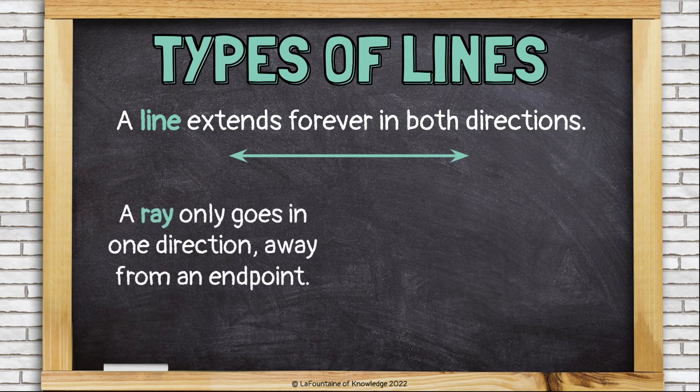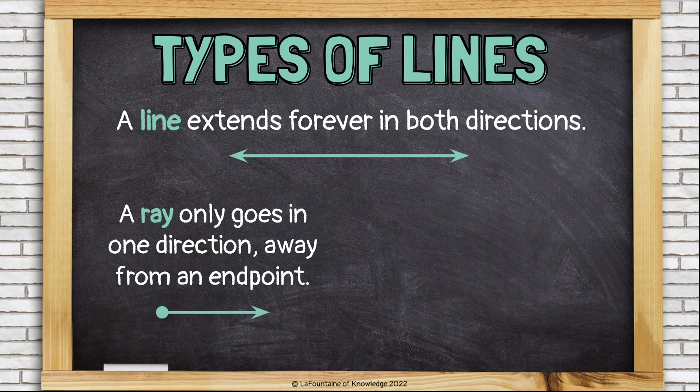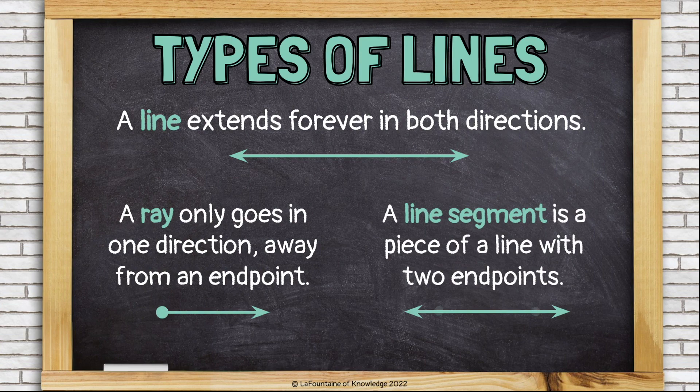A ray only goes in one direction, away from an endpoint. A line segment is a piece of a line with two endpoints. This is called a point or an endpoint.